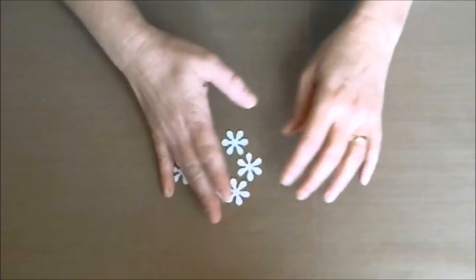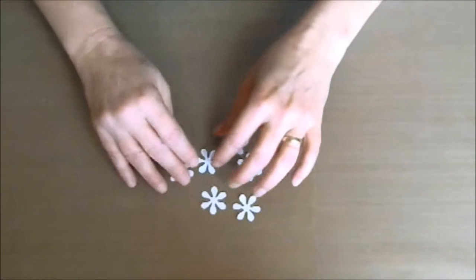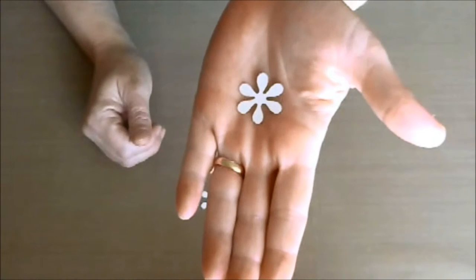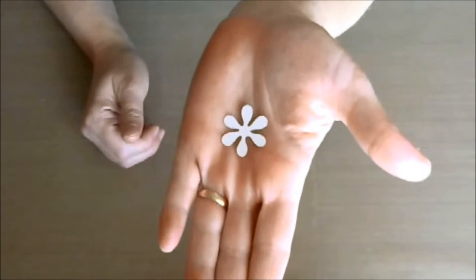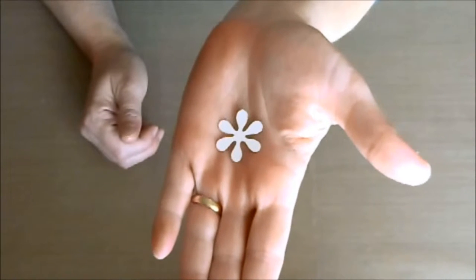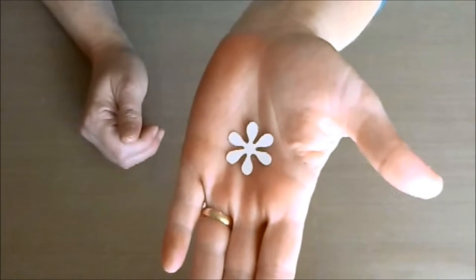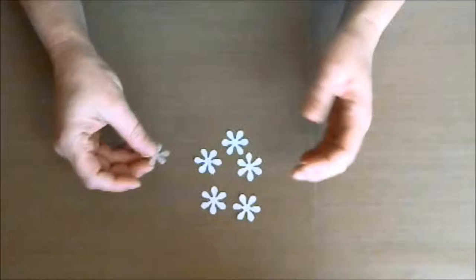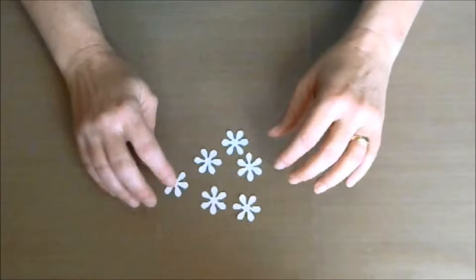Here I have six one-inch flowers. These flowers were cut using the Cricut Cartridge Accent Essentials, and I used the Cricut Craft Room to cut these out, using the auto-fill feature.